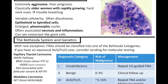Next up, we've got undifferentiated or anaplastic carcinoma. This is extremely aggressive, as the name would suggest, and has a very poor prognosis. It classically occurs in older women with a rapidly growing, hard neck mass that can cause trouble breathing. It can have variable cellularity and is often discohesive, with epithelioid to spindled cells, enlarged pleomorphic nuclei, and it's often associated with necrosis and inflammation. You can also see osteoclast-like giant cells.